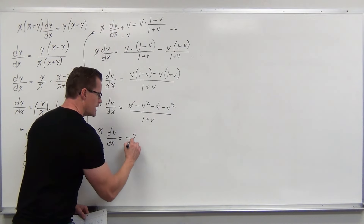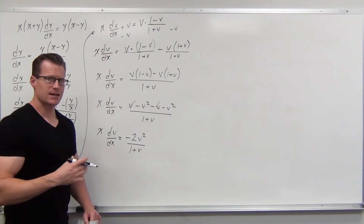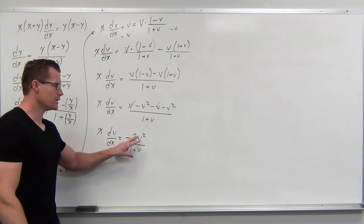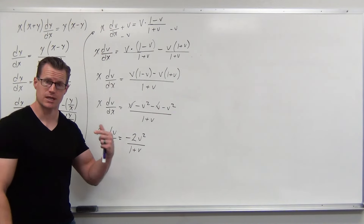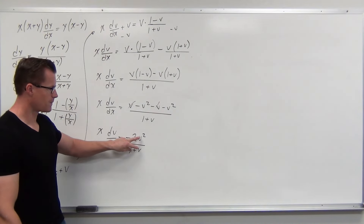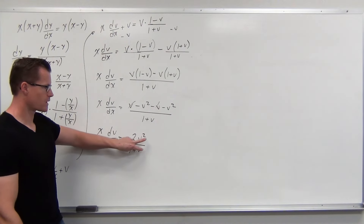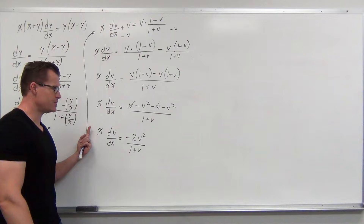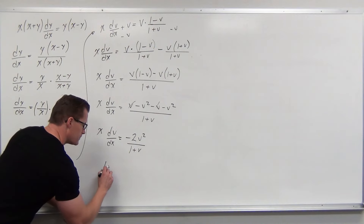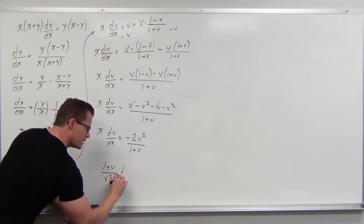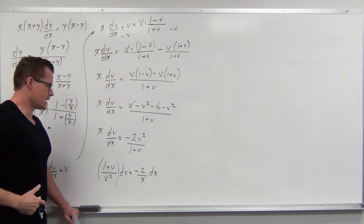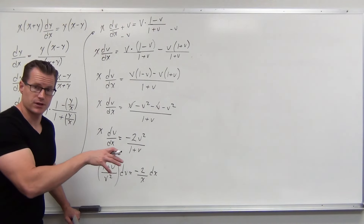Simplifying, x(dv/dx) = −2v²/(1+v). Now the v's are wrapped in one fraction and x is separate. Let's separate variables: keeping the negative 2 on the right with dx, and moving the v terms to the left. We get (1+v)/v² dv = −(2/x) dx. Let's divide by x and move dx to set up integration.